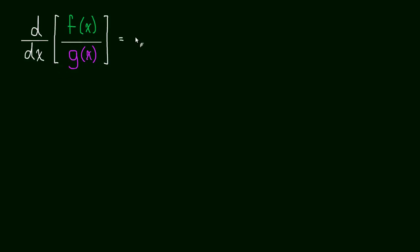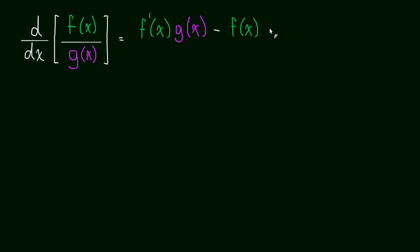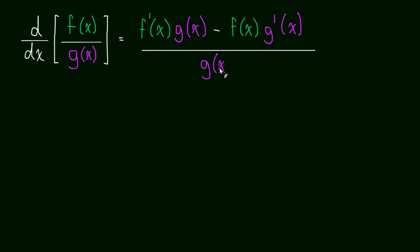If we want to take the derivative of a quotient — two functions being divided by each other — what we do is we take the derivative of the numerator and then we multiply by the denominator just left as is, and then we subtract the numerator left alone, so no derivative or anything, times by the derivative of the denominator, all over the denominator squared — so g of x squared.